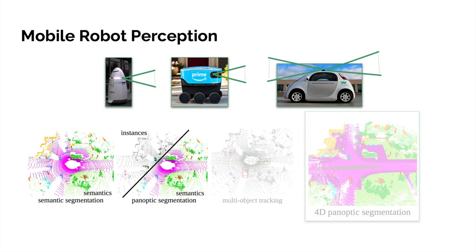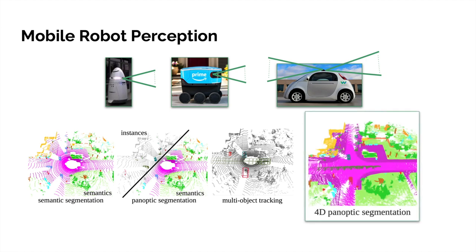Previous work has focused on the interpretation of individual scans. Orthogonally, 3D multi-object tracking methods commonly first train LiDAR object detectors, then associate these detections over time. In this paper we propose 4D panoptic segmentation that unifies all these perception tasks.